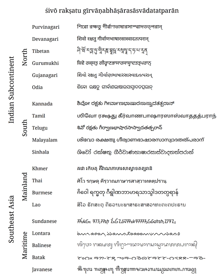The Brahmic scripts are a family of abugida or alphabet writing systems. They are used throughout the Indian subcontinent, Southeast Asia and parts of East Asia, including Japan in the form of Siddham.